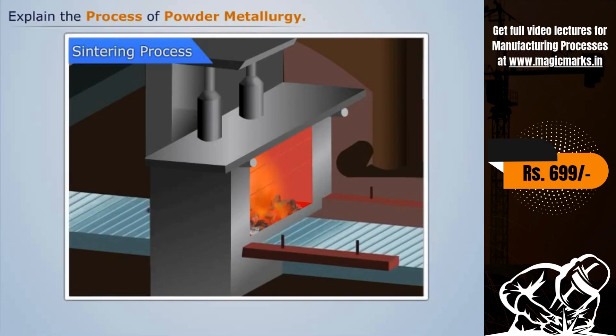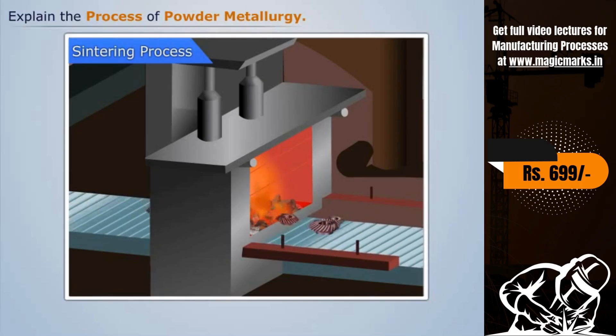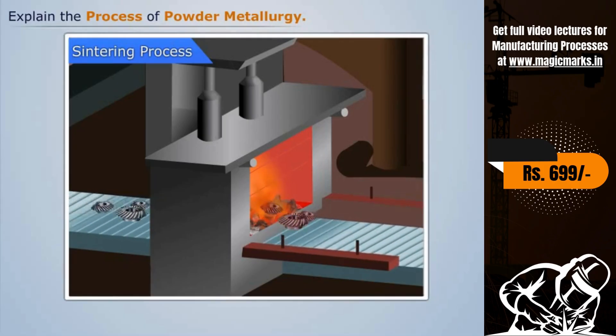In order to provide strength to the material, the material is heated in a furnace. The heat treatment is done below the melting point of the basic metal. This process is known as sintering.